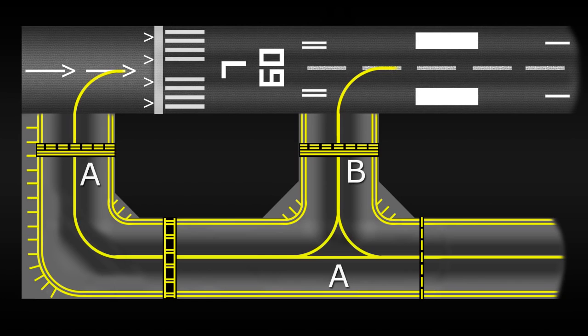So first, let's start with taxiway signs. Let's imagine that this long taxiway is taxiway Alpha, and then the short one is taxiway Bravo, both of which connect to a runway.